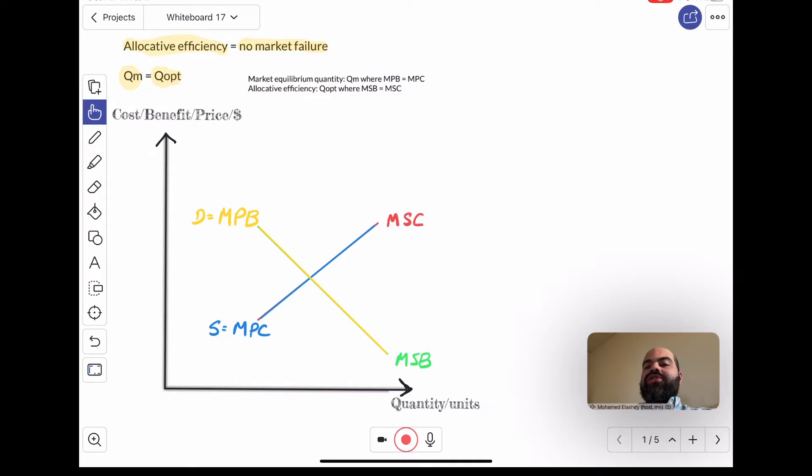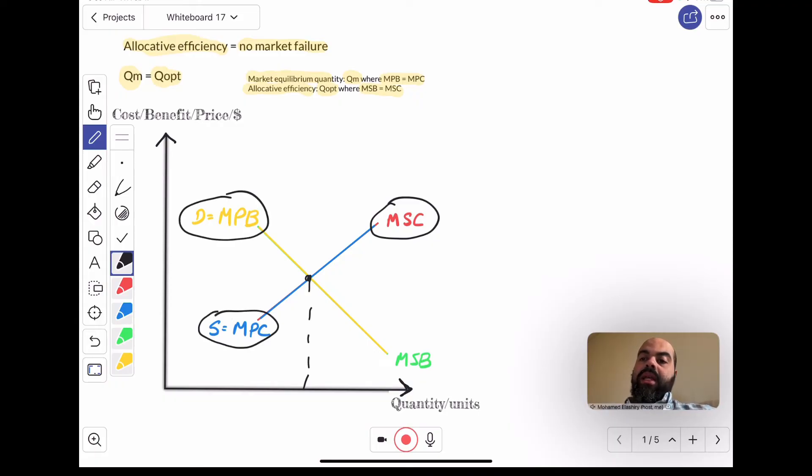The MSB is the extra benefit society gains from consuming one additional unit. The MSC is the extra cost of producing one additional unit. Now, two conditions I want you to remember: market equilibrium happens at qm when MPB equals MPC. Allocative efficiency happens, which gives us qopt, where MSB equals MSC. If there are no externalities, they will all align.